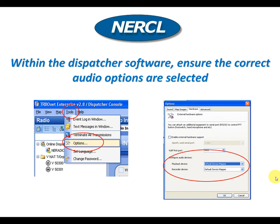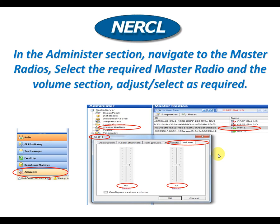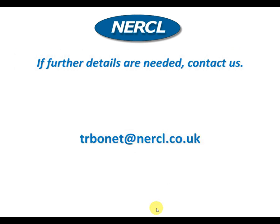Just a recap: open up the dispatcher software, navigate to Tools, then Options. Within Options, go to Hardware, then configure the audio devices connected to the client. You can also alter some levels by logging on as administrator, navigating to the administrator section, then Master Radios, selecting a master radio, and navigating to the Volume section where you have RX Audio and TX Audio. I think that sums it up. If you need any further details, please contact me. Thank you.